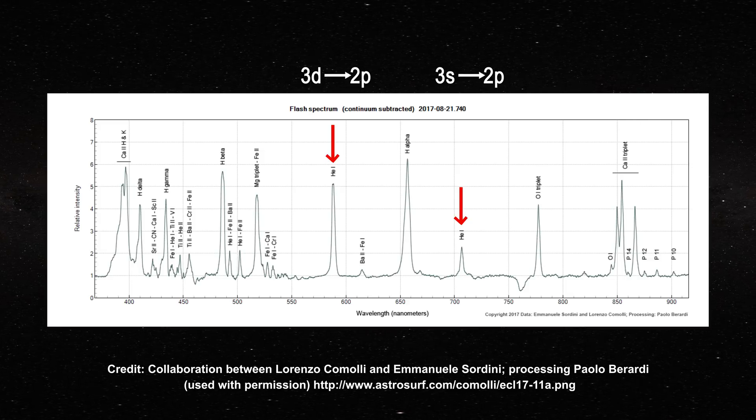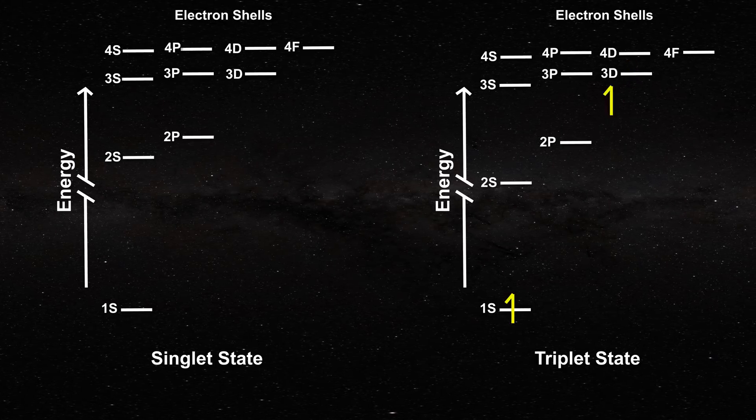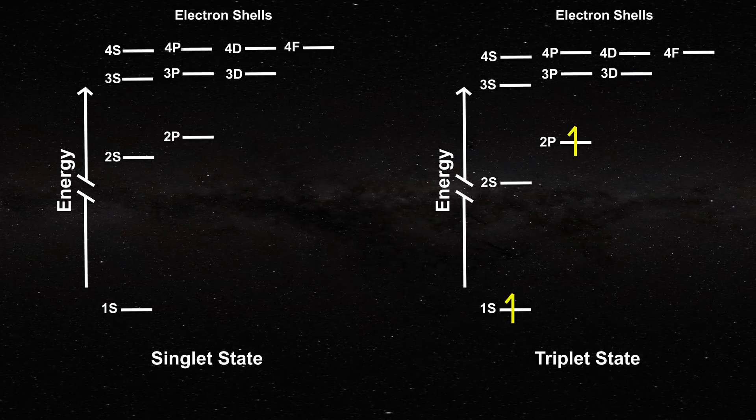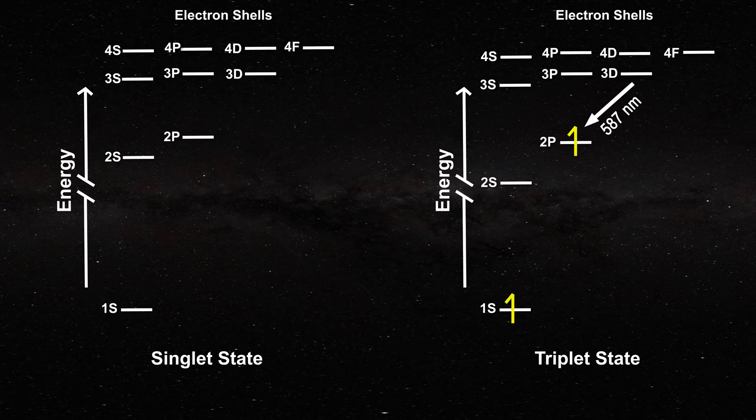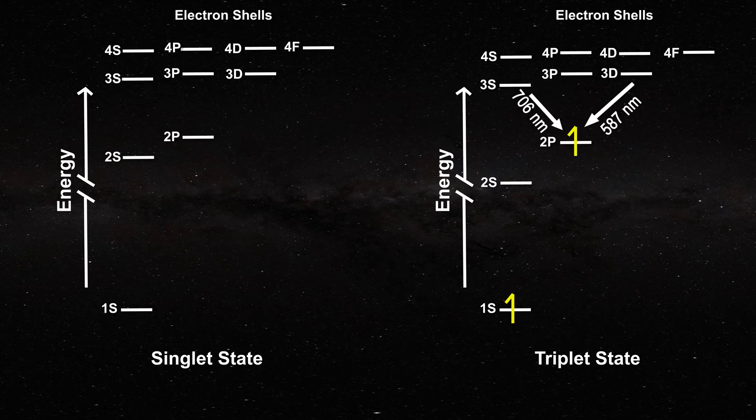You can see these transitions in this figure. Here is the 3d to 2p transition at 587 nanometers. Here is the 3s to 2p transition at 706 nanometers.